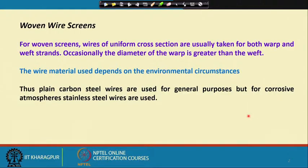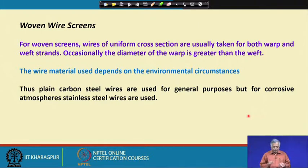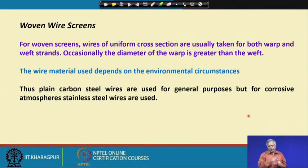Woven wire screens - the wires of uniform cross section are usually taken for both warp and weft strands. You have to take uniform cross sections, otherwise the aperture sizes will differ. Occasionally the diameter of the warp - which is basically withstanding the maximum load of the particles - is greater than the weft.